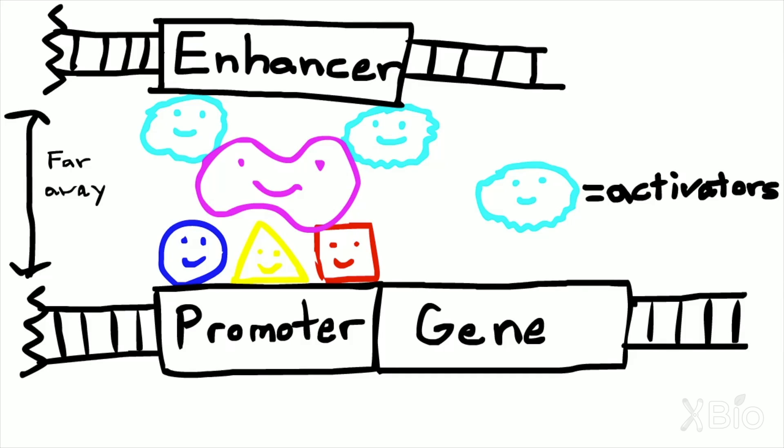Fascinatingly, enhancers are often located thousands of base pairs away, and so the DNA must loop around to allow for enhancers to get close to the promoter.